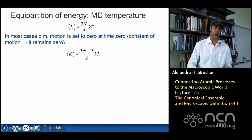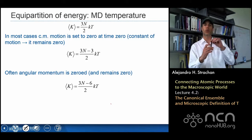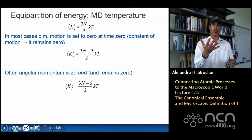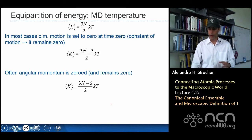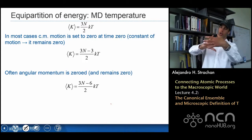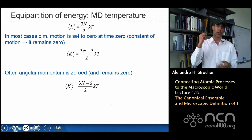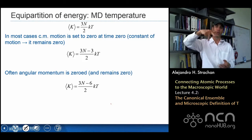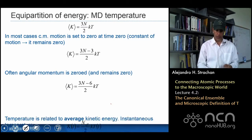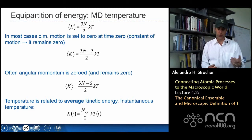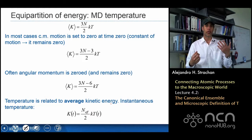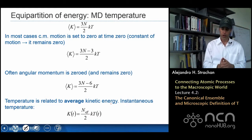When we do molecular dynamics simulations, we often zero the center-of-mass velocity of the system, so we don't have 3N degrees of freedom but 3N minus 3. For non-periodic systems with molecules, we often make the angular momentum zero as well, removing another 3 degrees of freedom related to the three Euler angles. So in general, the kinetic energy is three-halves times the number of effective degrees of freedom times kT.